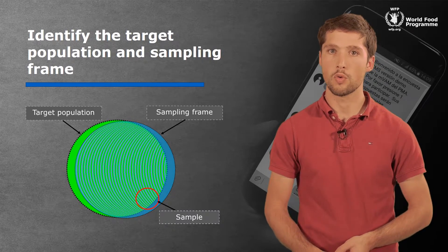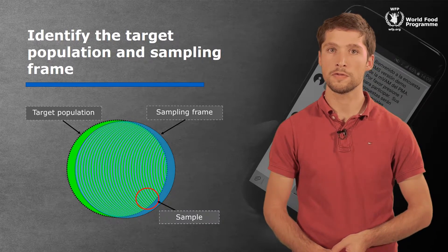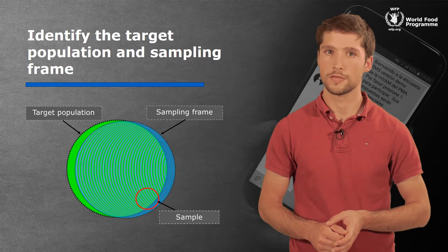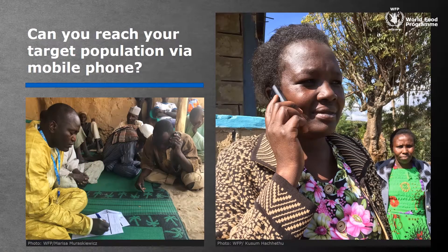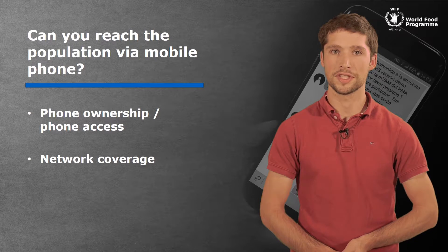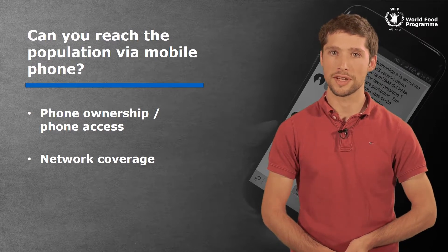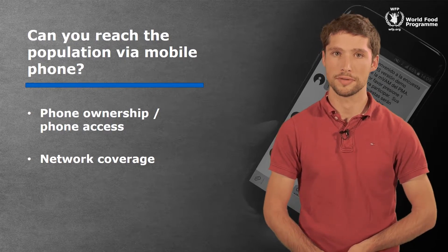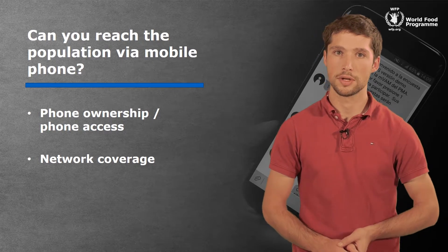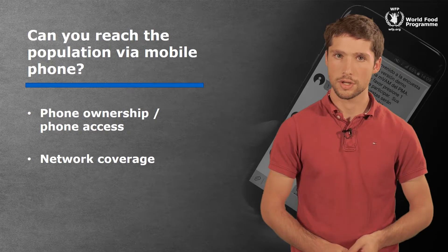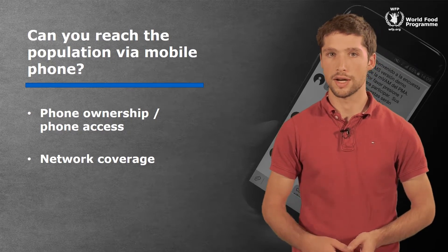When designing the sample, we have to consider that for remote food security surveys there are a number of questions we always have to answer. The first is: can you reach your target population via mobile phones? When you are designing a remote food security survey, you cannot reach people who do not have access to a phone unless you give them phones. This can create bias in your results, as you may not be able to reach the poorest segment of your target population.